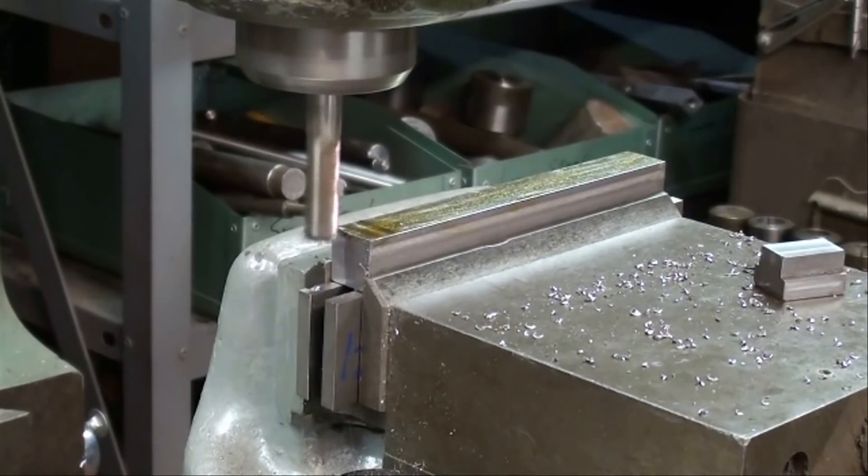I'm going to take a total of three passes on this surface: seventy-five thousandths for the roughing pass, then forty thousandths, and then a final ten thousandths as a finishing cut.